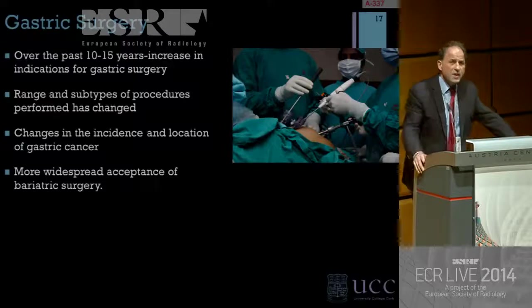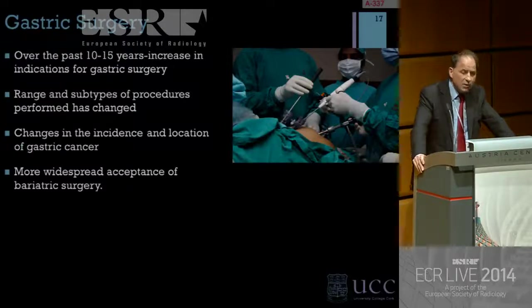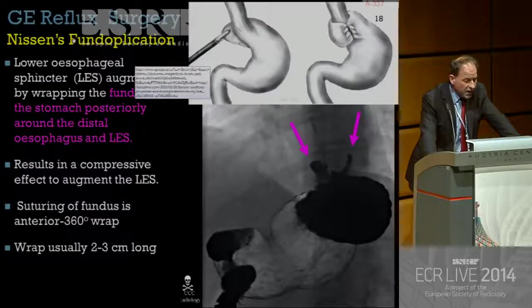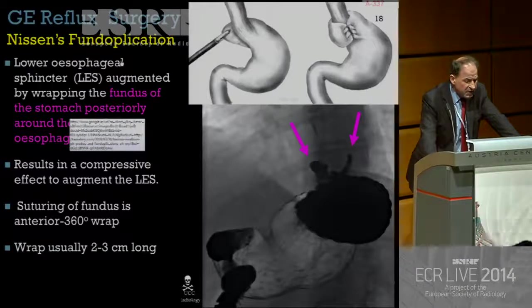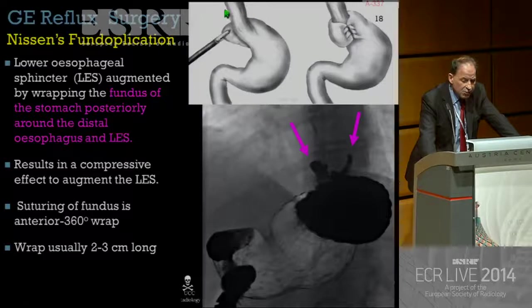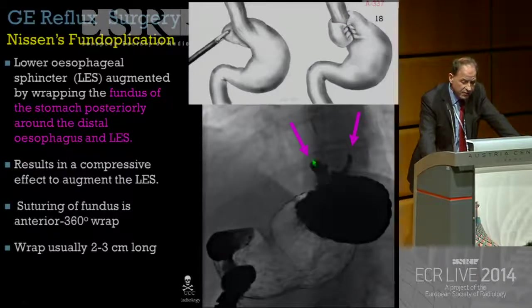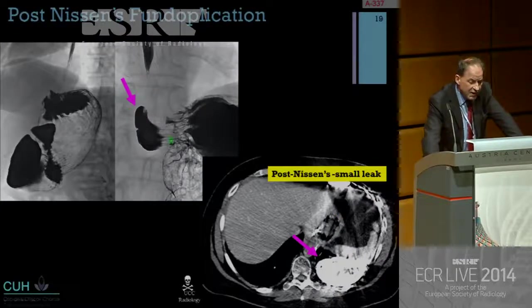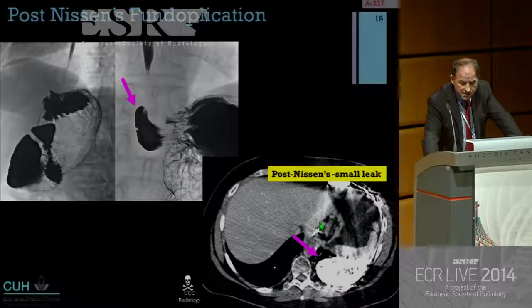Moving on to the stomach — there's been a lot of change in gastric surgery in the last 10 to 15 years. The range and subtypes of procedures have changed, with changes in the incidence and location of gastric cancer and more widespread acceptance of bariatric surgery. Nissen's fundoplication is now very commonly performed laparoscopically: the fundus is mobilized and a wrap is formed anteriorly, causing augmentation and narrowing at the level of the gastroesophageal junction. One case showed a fundoplication with a leak and a collection of barium in the left pleural space.